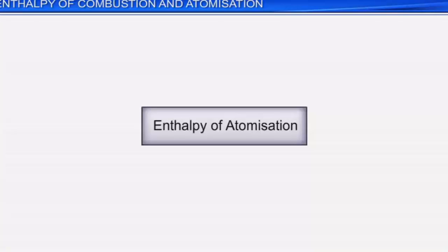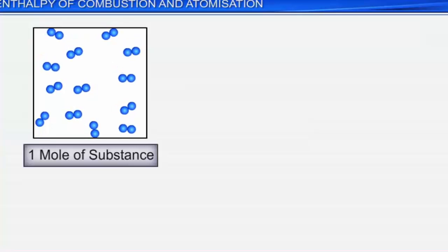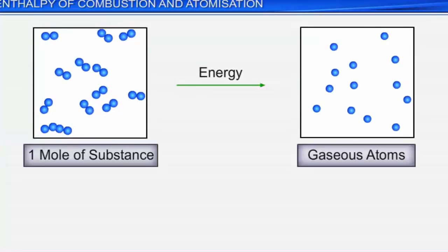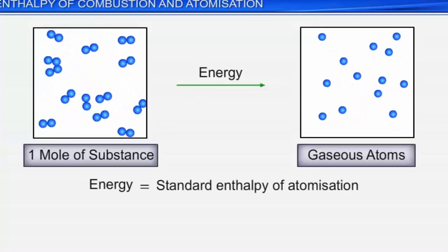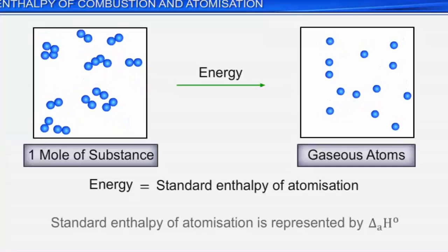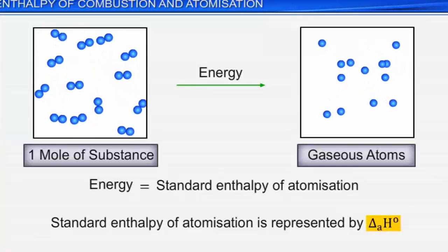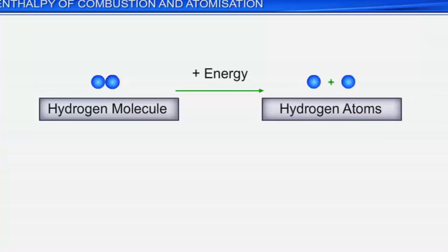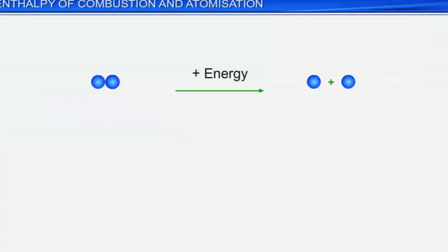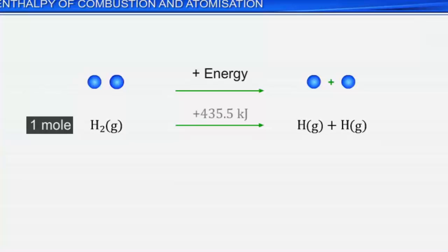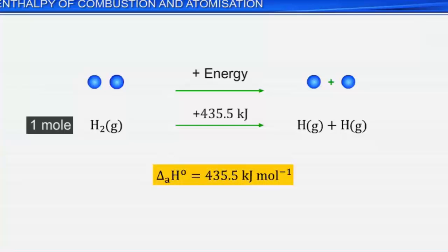Now let's look at enthalpy of atomization. When one mole of a given substance dissociates into gaseous atoms, the enthalpy change accompanying the process is called the standard enthalpy of atomization, represented by ΔaH⁰. Let's consider the atomization of dihydrogen into hydrogen atoms. In this reaction, hydrogen atoms are formed by breaking of H–H bonds in dihydrogen. The conversion of one mole of hydrogen molecules into hydrogen atoms requires 435.5 kJ per mole of energy. Therefore, the enthalpy of atomization of dihydrogen is 435.5 kJ per mole.